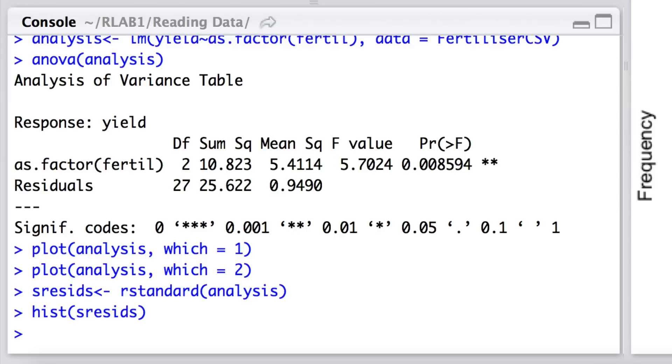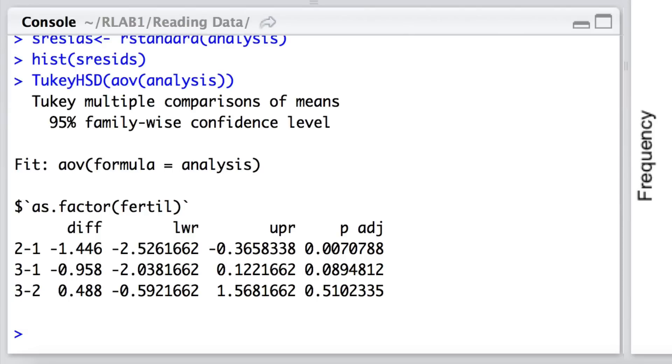We can address this question by doing so-called post-hoc tests, and the post-hoc test that I'll be calling up is the Tukey honestly significant difference test. Here it is, Tukey HSD, and what we're going to be doing is calling up AOV analysis. That's the analysis of variance, another form of doing an analysis of variance on that overall analysis, and this is what we find with the Tukey HSD test.